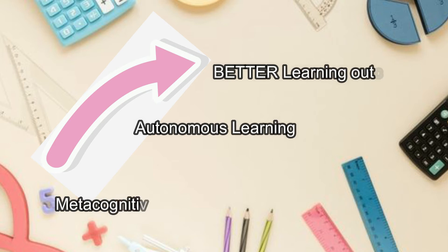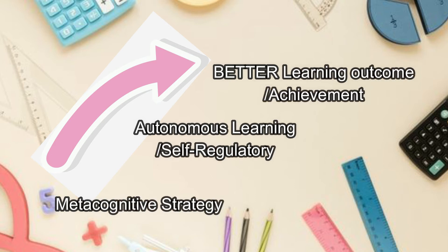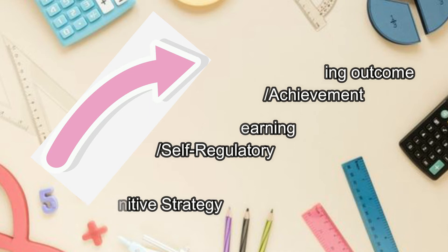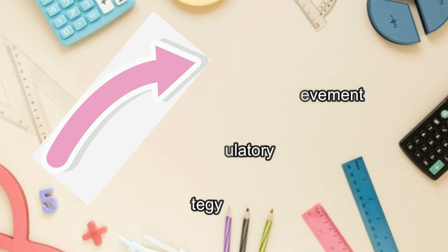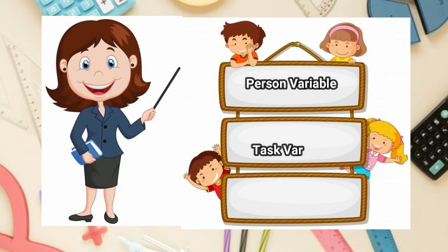And what might they do in the future to improve their performance in a specific skill. As a result of this kind of process, learners would become increasingly autonomous in their learning since they are aware of their strengths and weaknesses. There are three types of knowledge that students need in order to develop and choose the best strategy. First is the person variable — the knowledge and beliefs learners have about their abilities as a learner.